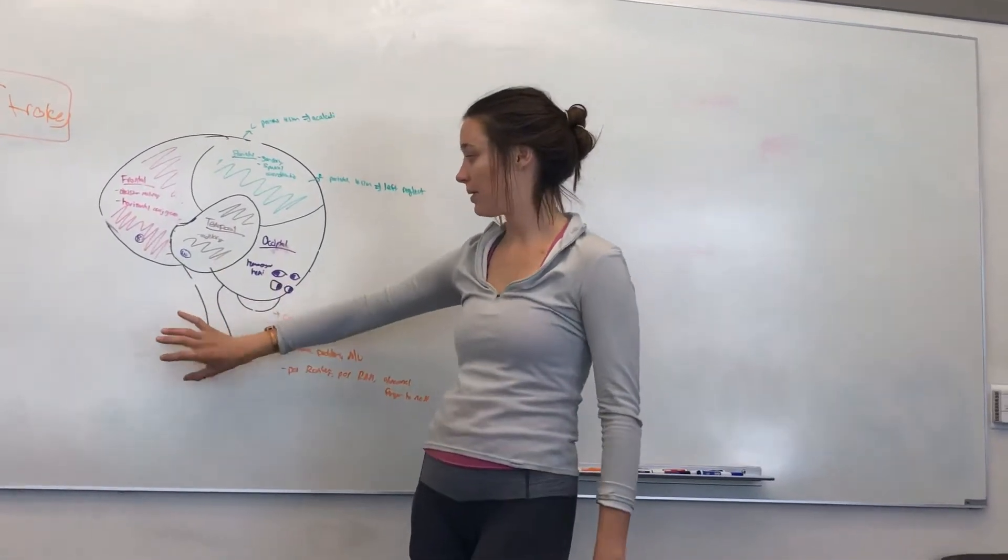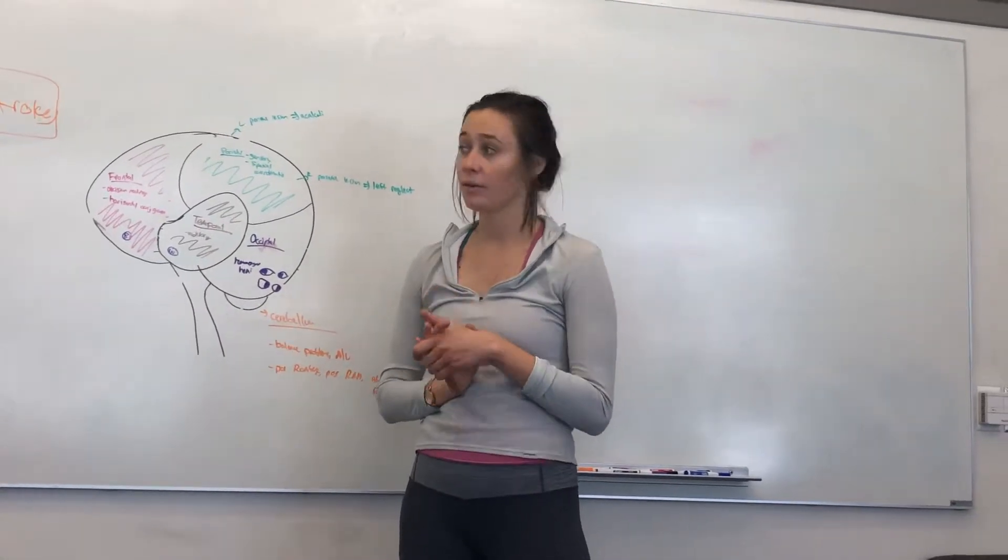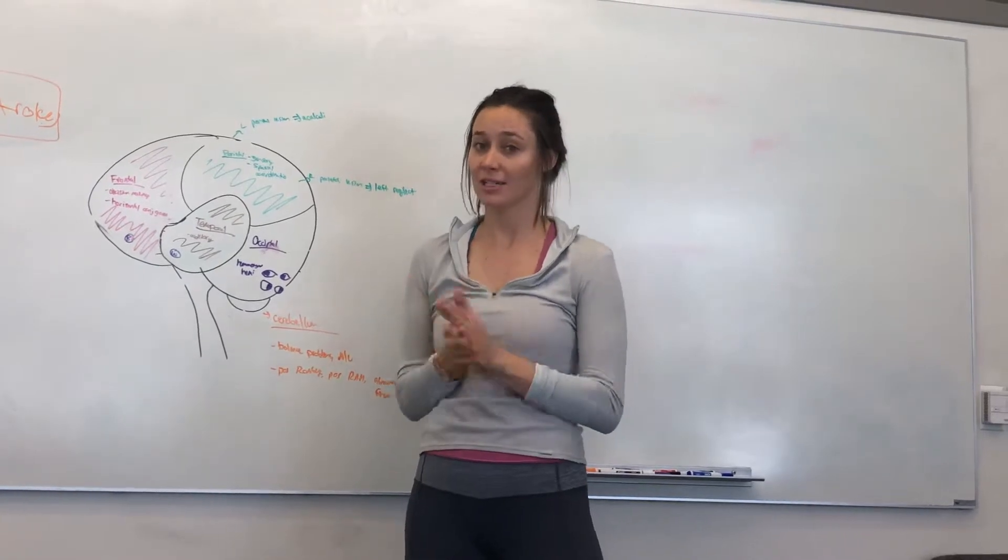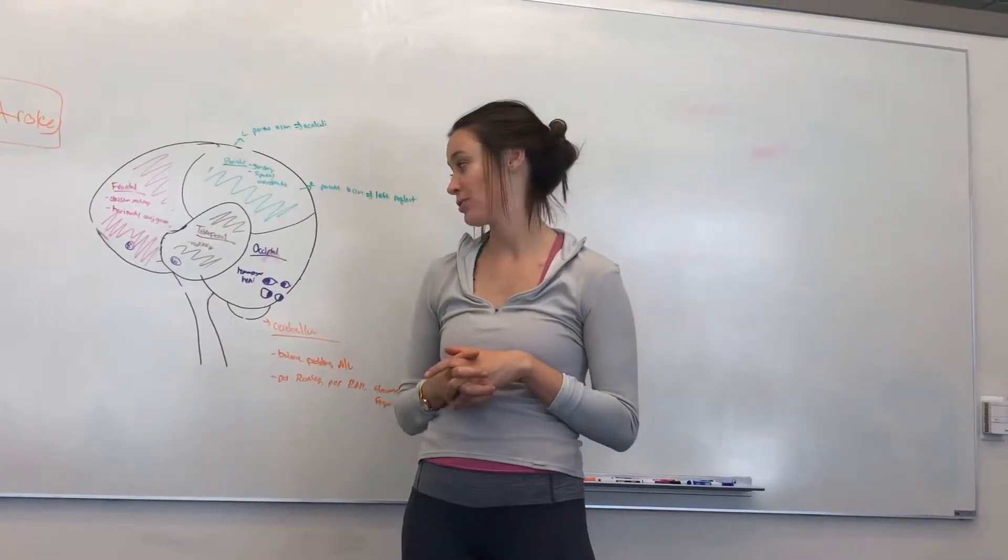Additionally, I didn't draw this in, but in the brainstem we have the midbrain, pons, and medulla. We know the midbrain is cranial nerves 3 and 4, pons is 5, 6, 7, 8, and then medulla is 9, 10, 11, 12.